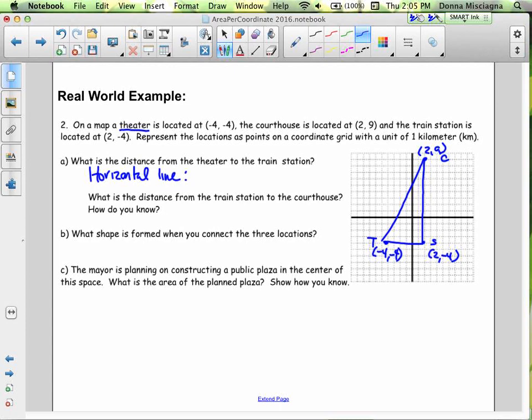So that would be negative 4 minus 2. Actually, I'm going to write what this is - this is theater to train station. So T to S would be the absolute value of negative 4 minus 2, which is just the absolute value of negative 6 or 6.